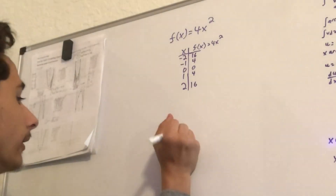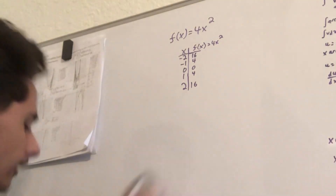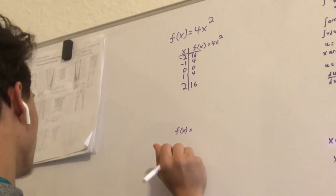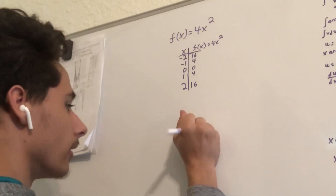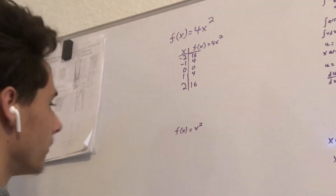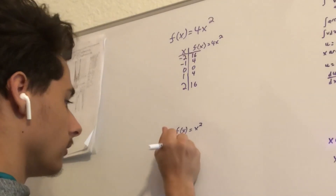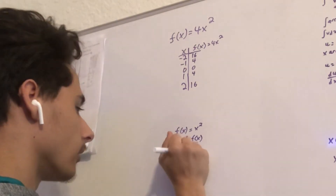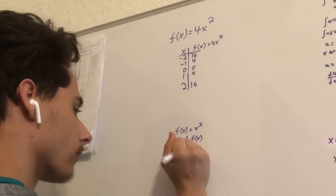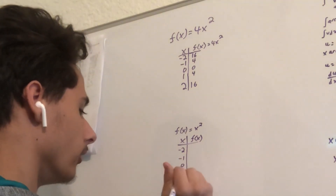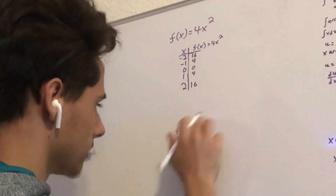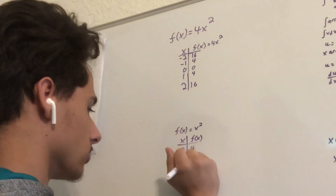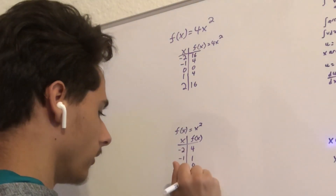So we're gonna do y equals — actually we're just gonna use f(x) because I find that easier. So f(x) equals x squared. That's gonna be really easy. So we have x values: negative two, negative one, zero, one, two. Since it's x squared, it's just gonna be: negative two squared is four, negative one squared is one, zero, one, four.